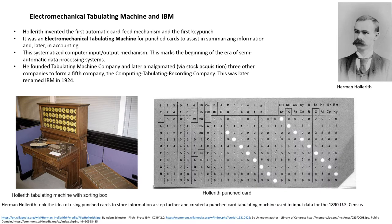The electromechanical tabulating machine was the first automatic card-feed mechanism for punching cards. Hollerith invented this machine. It was also the first key-punch machine to produce punching cards meant for input of data to the machine for processing and output of the results. Thus, the machine became a systematized computer and input-output machine, marking the beginning of the era of semi-automatic data processing. Hollerith upgraded the idea of punching cards for information storage to create a punching card tabulating machine to input data for the 1890s US Census.